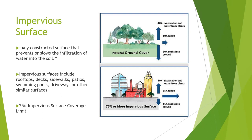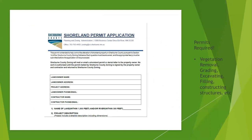Generally, a shoreland alteration permit is required for vegetation removal, grading, excavating, filling, and constructing structures. The application is available on the Sherbourne County website in the Planning and Zoning department section. Each proposed project requires documentation of what vegetation will be removed, re-vegetation plans, erosion control best management practices being installed, and a detailed site plan with impervious surface calculations.